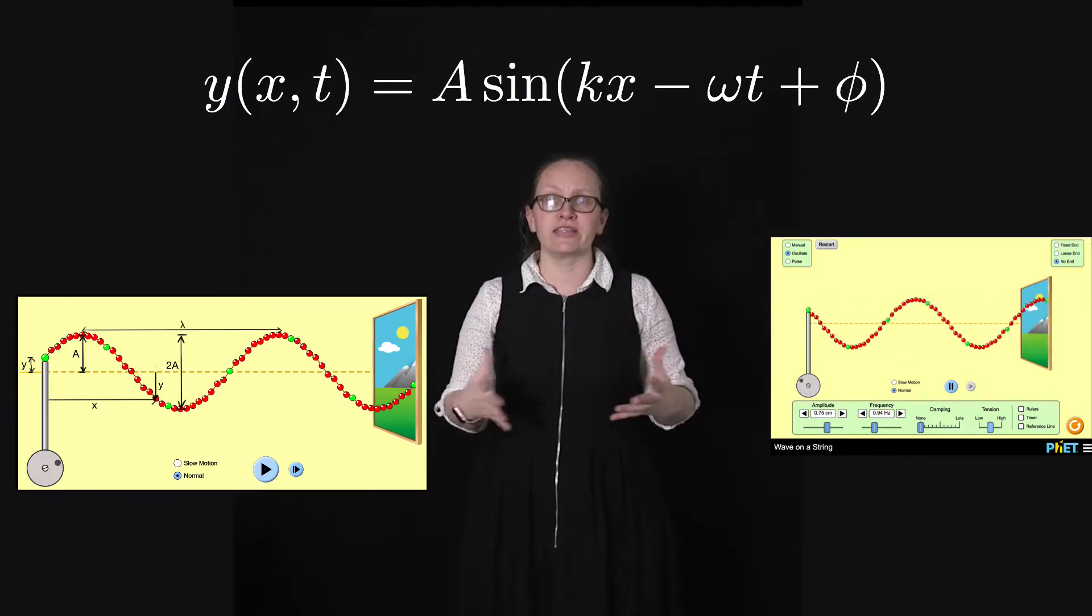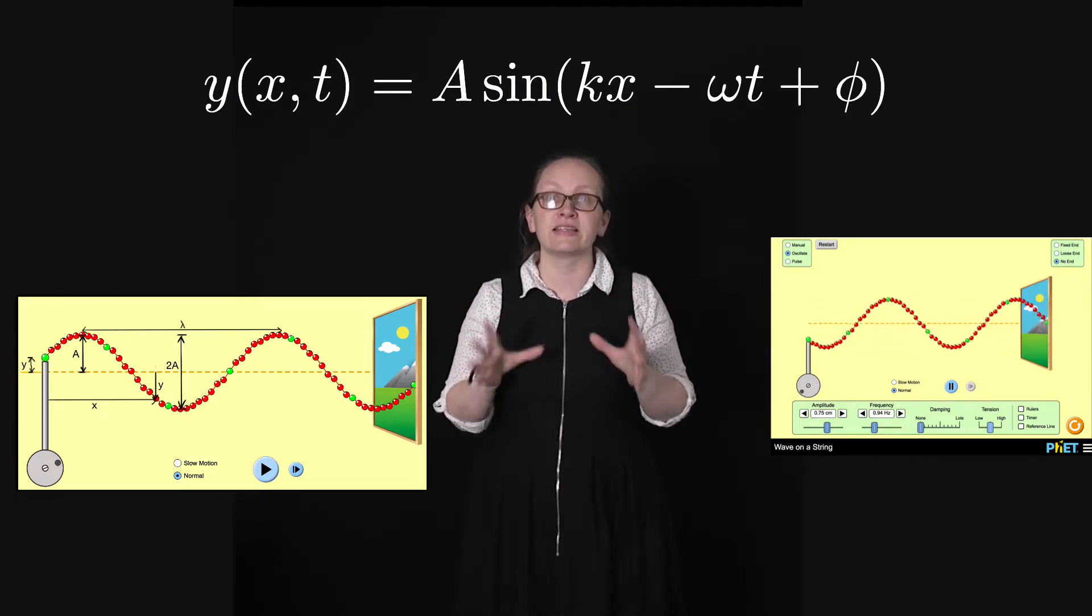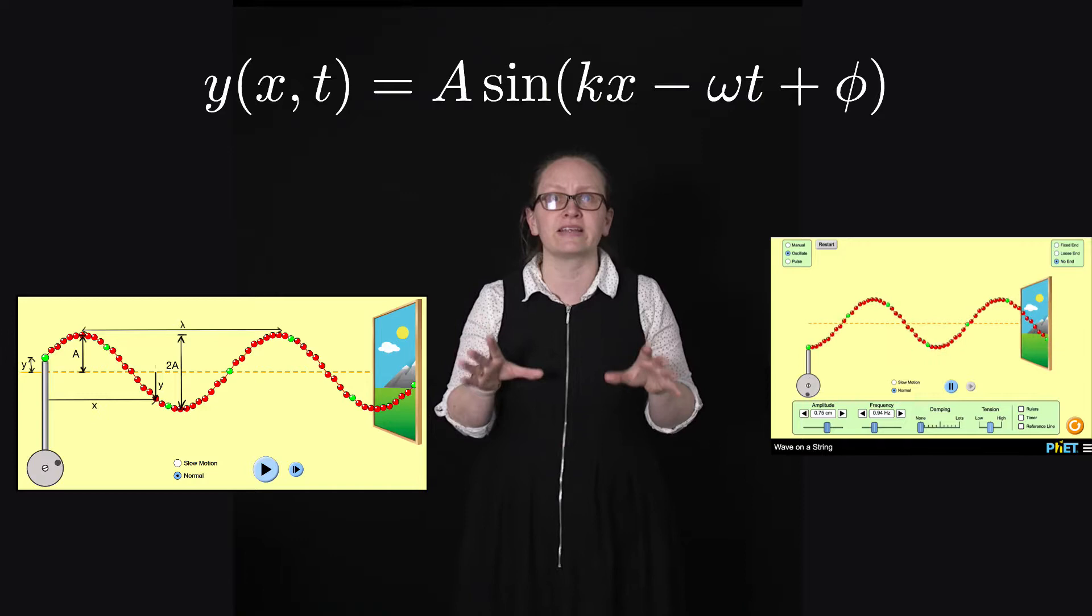So probably the best way to get used to this equation is to have a look at an example. So let's work through an example now. So the question is, a transverse wave traveling in the positive direction has a wavelength of 2.5 meters and a period of 2.0 seconds. The amplitude of the wave is 0.50 meters.